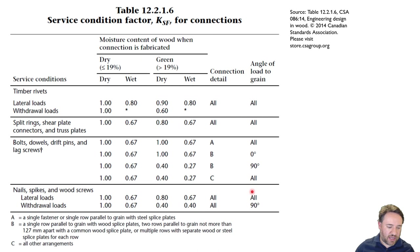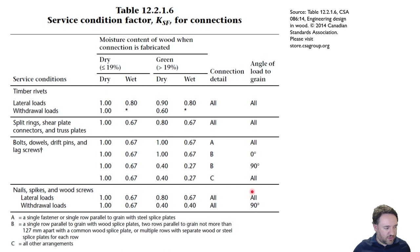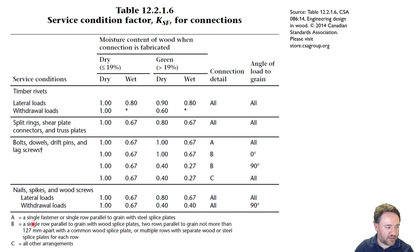For lateral loads on nails, the angle of load to grain doesn't matter — it's all the same, because nails are small. For withdrawal loads, they're always perpendicular to grain. For bolts, it's the same situation: dry installation, green installation, dry service, wet service. There are different connection detail types listed — if I have a single fastener or single row parallel to grain with steel splice plates, that is connection type A. If I have a single row with wood splice plates, or two rows parallel to grain not more than 127 mm apart with common wood splice plates, or multiple rows with separate splice plates for each row, that is condition B, which is actually the same as condition A.